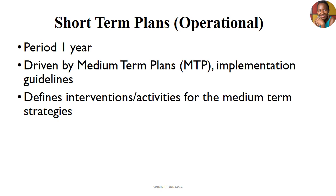In these short-term plans, we define interventions and activities to ensure that the medium-term strategies are achieved. For example, if you're looking at reducing the death rate in a country by 10%, you need to specify in the short-term plan which type of deaths you are targeting. If you're looking at maternal death, which specific cause is driving those mortalities?